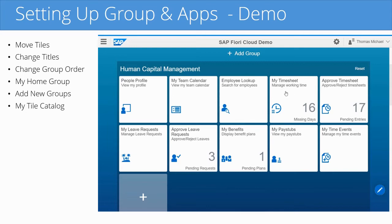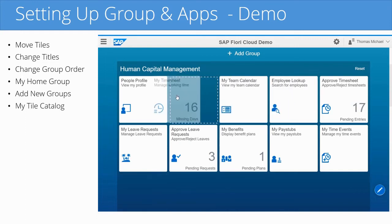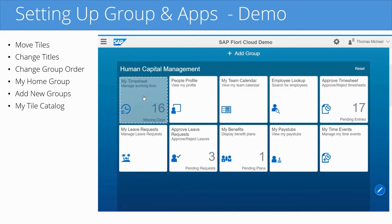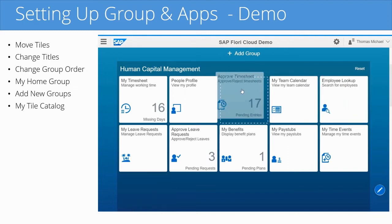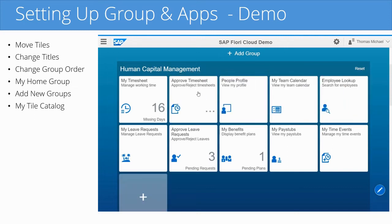Take this My Timesheet app, for example — I use this a lot every day, so I want it to be at the beginning of the group. I simply drag the tile and move it over here. And I can do the same thing with Approve Timesheet; I want this to be in the second position. So I simply drag this over and put the tiles in the order that I want.